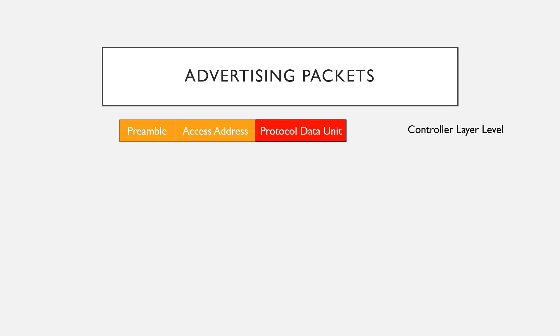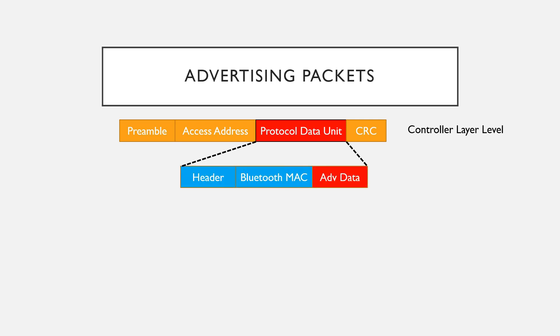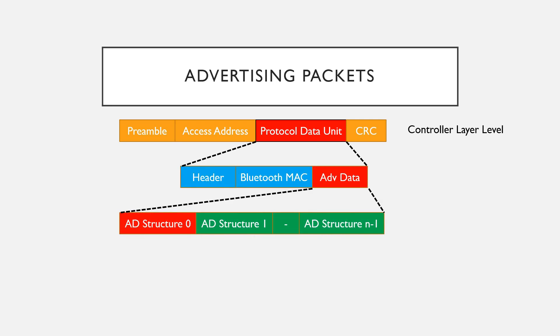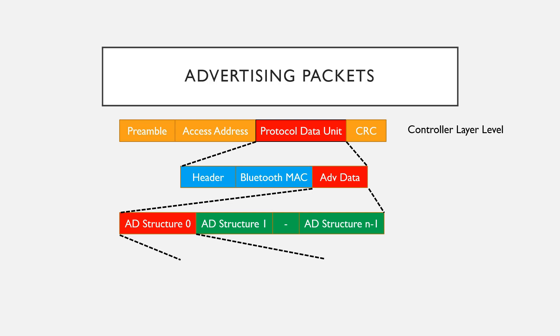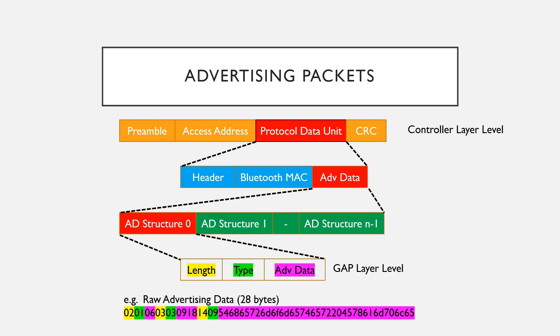Now let's understand the differences between the GAP layer advertising packets and the link layer advertising packets. The link layer advertising packet includes a preamble, access address, PDU — also called the packet data unit — and CRC. The GAP packet specifies the advertising data, also known as the advertising payload part of the PDU, and this part includes the advertising structure, also known as the AD structure, and AD type. The application developer is usually concerned with this advertising payload field, as the rest of the fields are automatically filled by the stack.